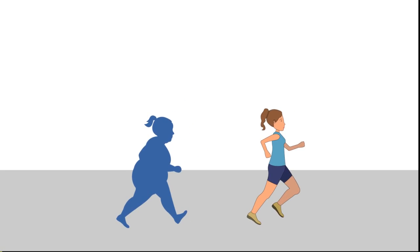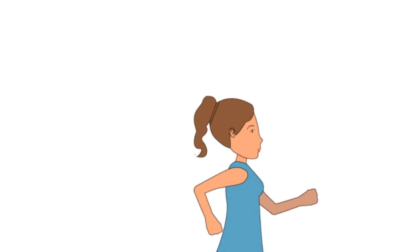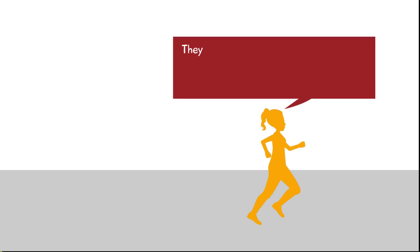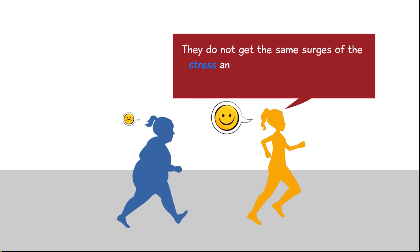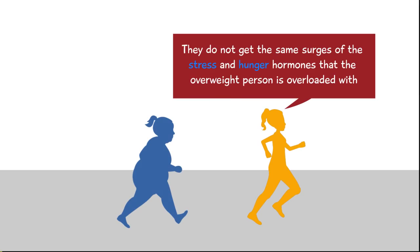Meanwhile, the already in-shape person who follows the same program gets totally different signals from the brain. They are actually bombarded with positive feelings caused by hormones with names like epinephrine. They do not get the same surges of stress and hunger hormones that the overweight person is overloaded with.